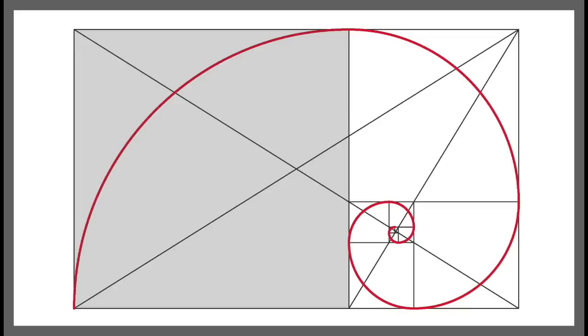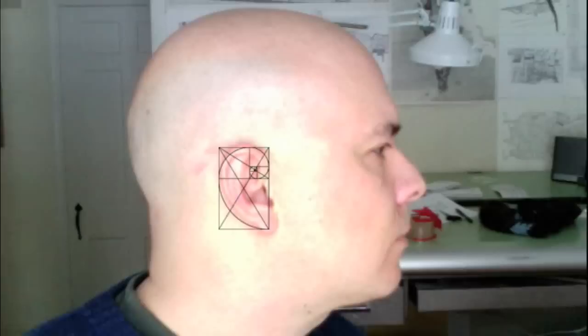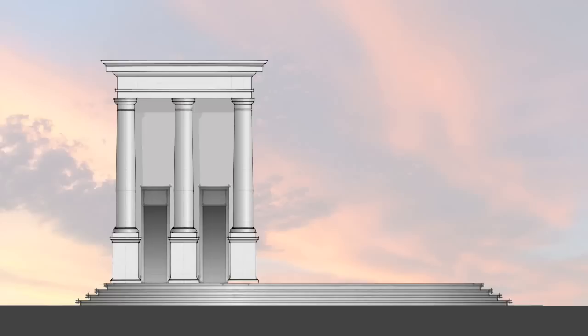The proportions are said to be defined because of their abundance in geometry, nature, and even our bodies. From the Greeks to the Renaissance to modern architecture today, the rectangle and its derivative proportional relationships have been and can be used in the planning of buildings, from individual elements to their plans and elevations.